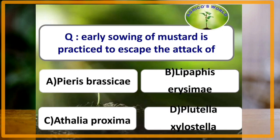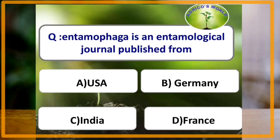Early sowing of mustard is practiced to escape the attack of which of the following pest? The answer is Lipaphis erysimi. Entomophaga is an entomological journal published from which of the following country? The answer is France.